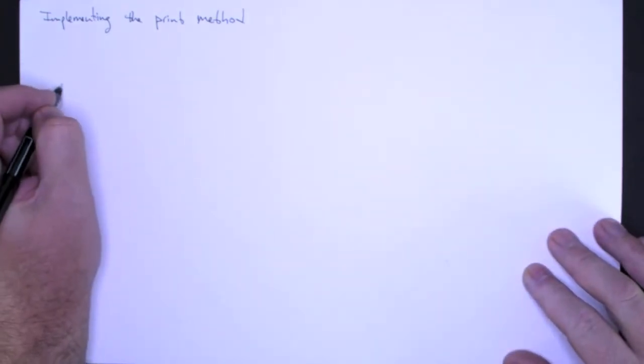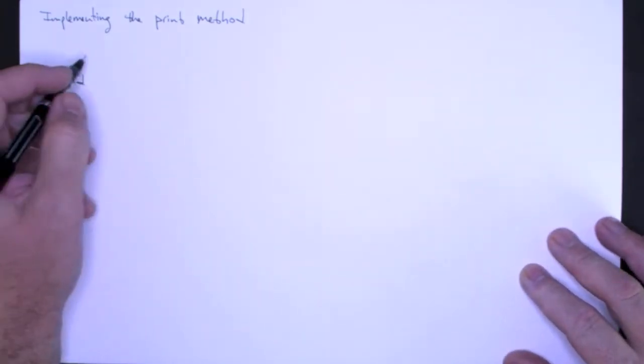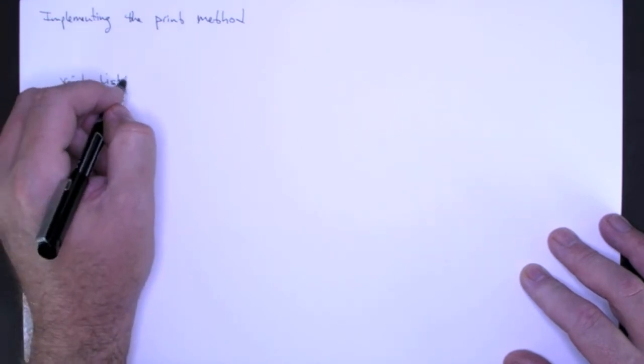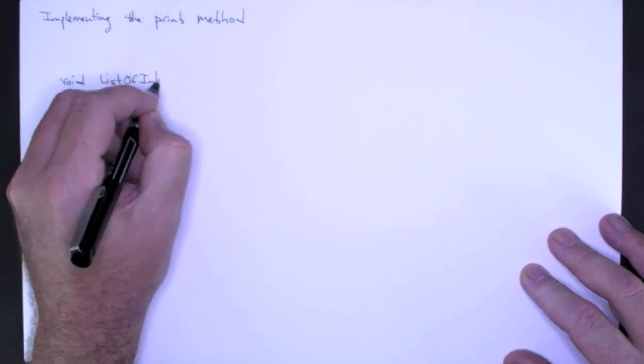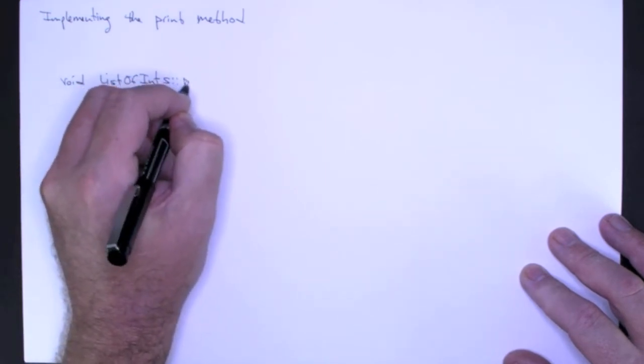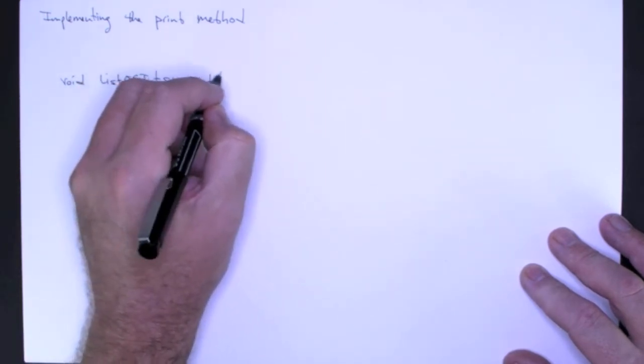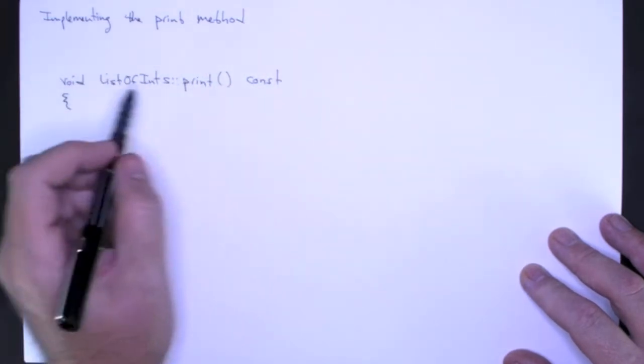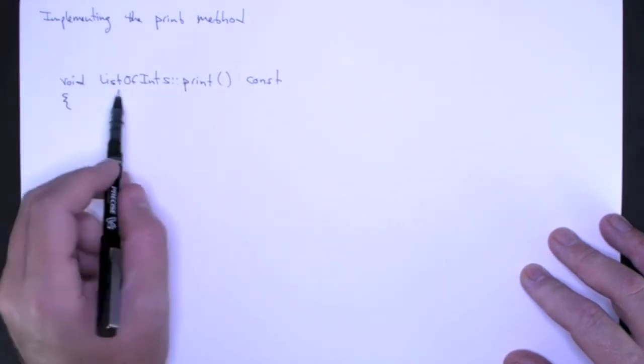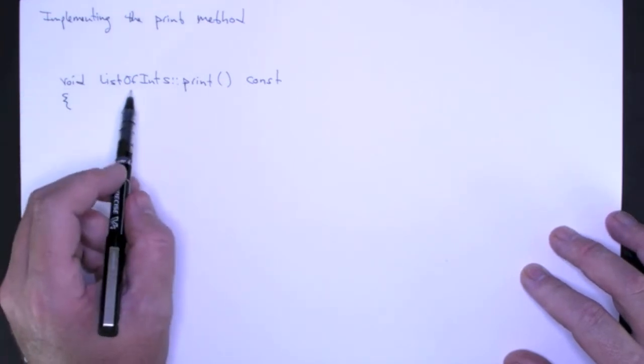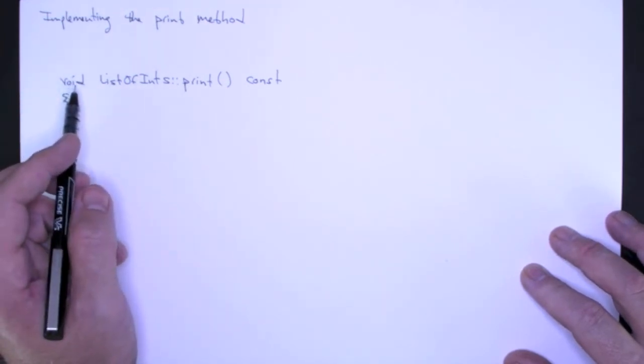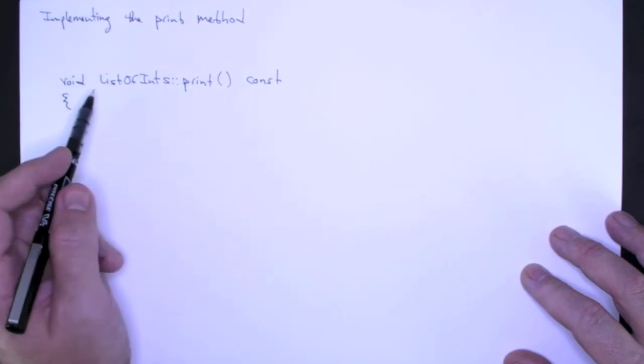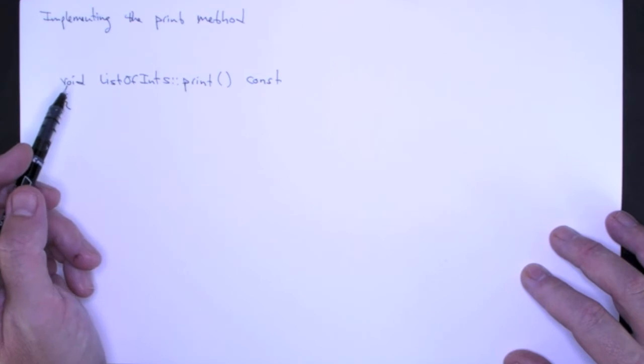So again we declare it. It is a void type, the name of the class is list of ints, and it's the print method, and this time I'm going to remember that it is constant. It's constant because it doesn't change the internal state of the list of integers, and we want to declare this constant in case we have a constant list and we want to be able to print its contents.